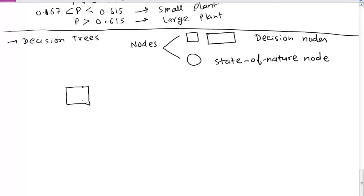We have this decision node with three branches. If we have a large plant, then there are two states of nature. One is a favorable market with 0.5 probability and unfavorable market with 0.5 probability. We represent probabilities along with these branches and the payoffs are written at the end.